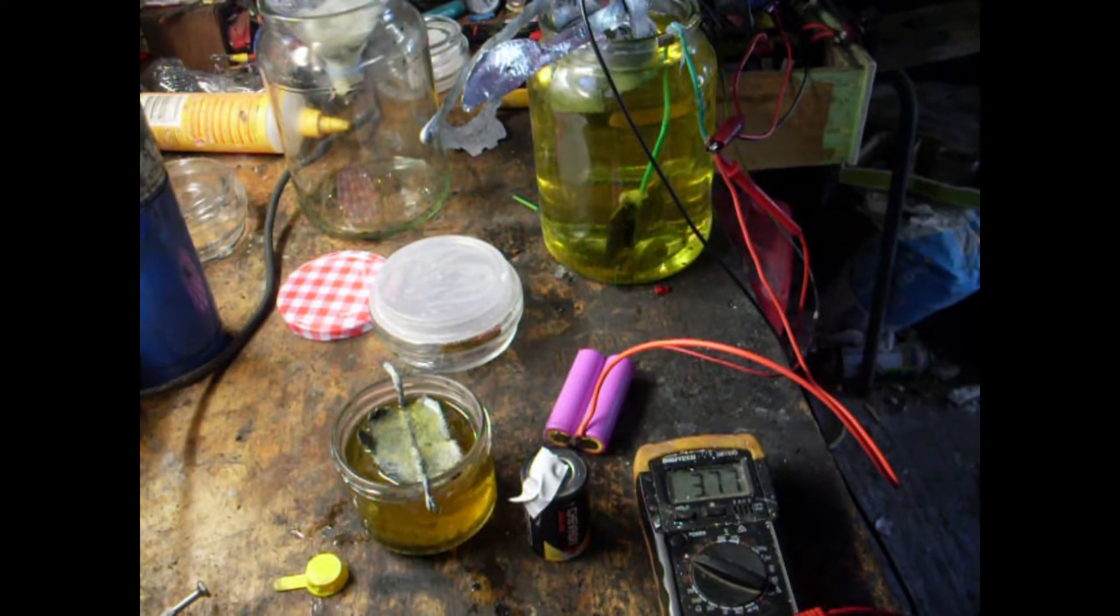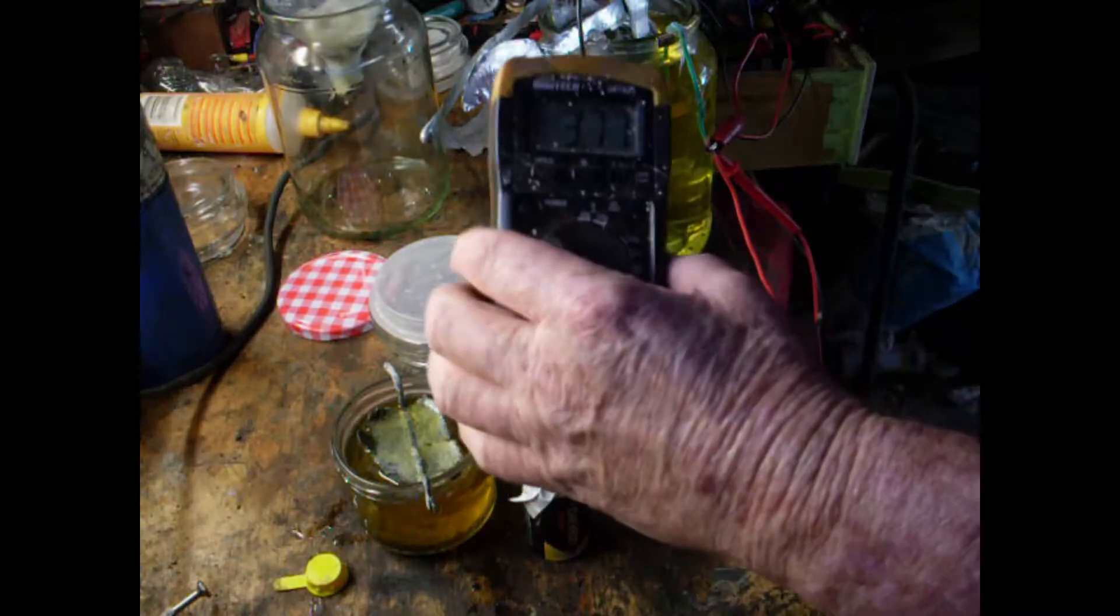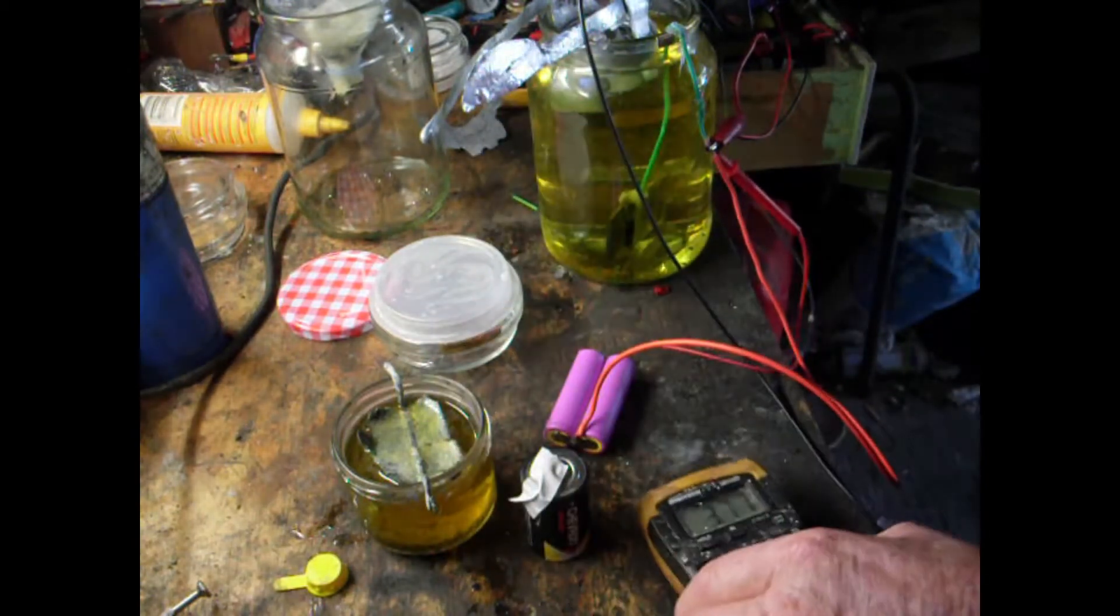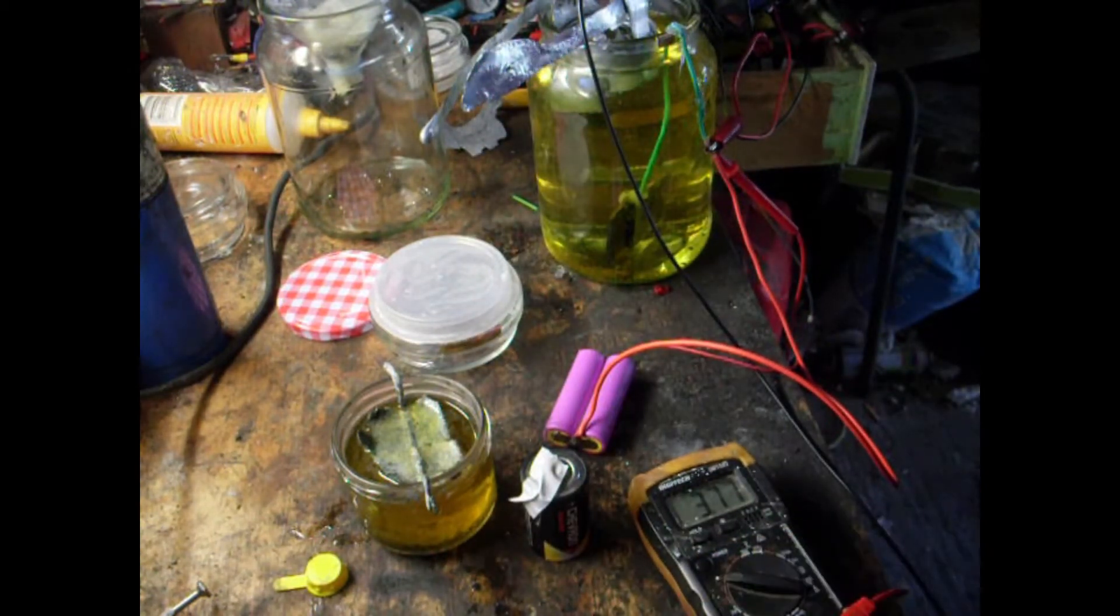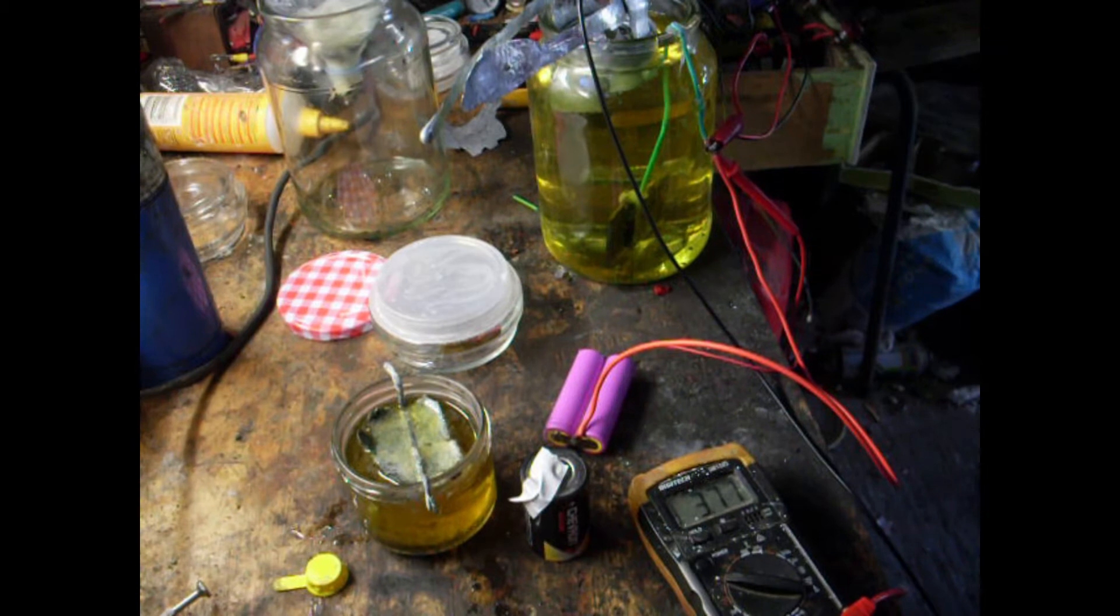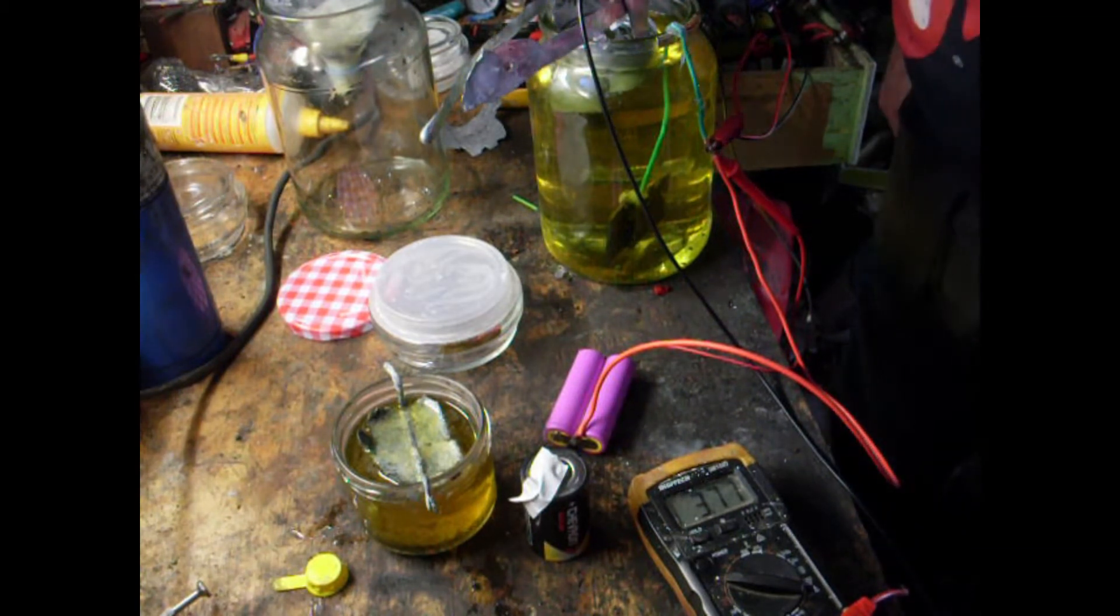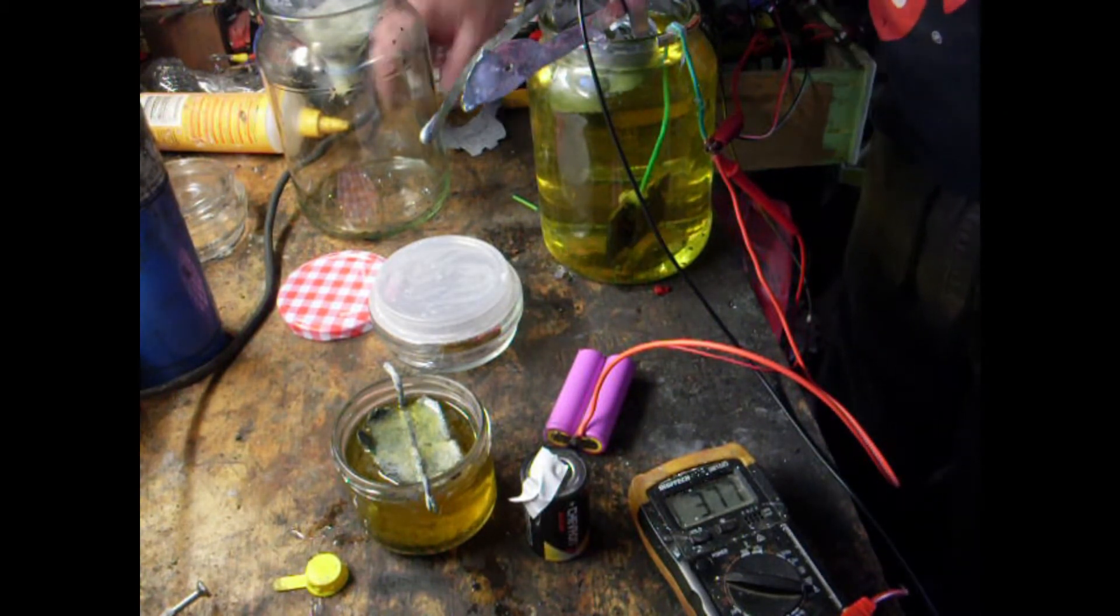Right, so now that's at 3.77 volts and it's got a zinc electrode on the top and a carbon electrode on the bottom. Now the top electrode has a very great deal of surface area.